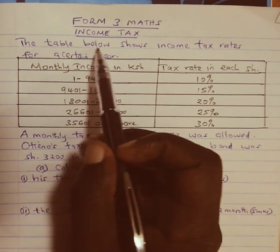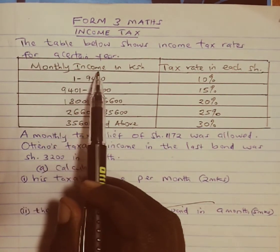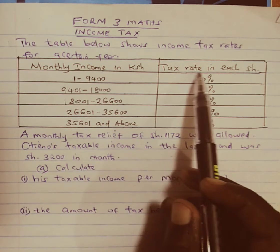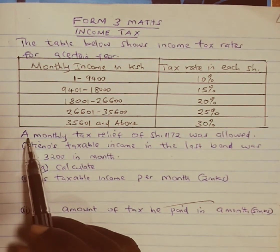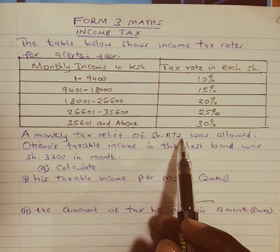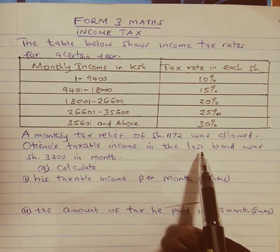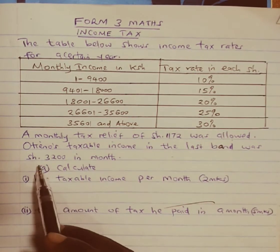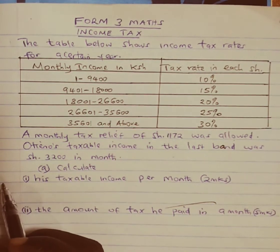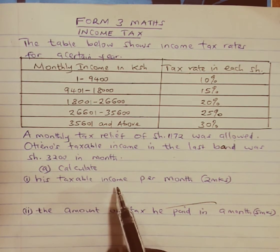The question reads: the table below shows income tax rates for a certain year. We have the monthly income in Kenyan shillings and the rate of tax in each shilling. We are told that a monthly tax relief of 1,172 shillings was allowed. Otieno's taxable income in the last bracket was 3,200 shillings in a month. Part A: calculate his taxable income per month.